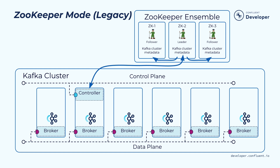The old way of managing the control plane is through ZooKeeper. One broker is picked as a special controller, and the controller is responsible for managing and changing the metadata of the whole cluster. The metadata is persisted in the consensus service, which is the external component called ZooKeeper. The controller is also responsible for propagating the metadata changes to the rest of the brokers.